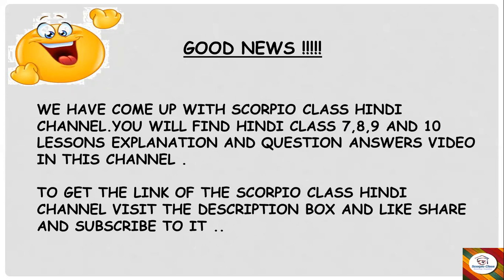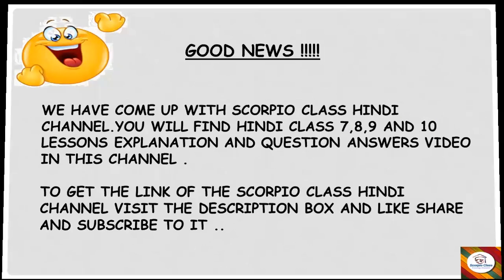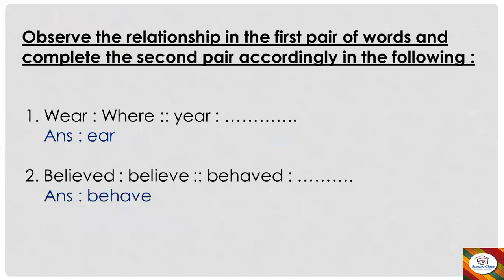So students, let us now start with the analogy questions. The heading under which these questions are given in your question paper is: 'Observe the relationship in the first pair of words and complete the second pair accordingly in the following.' This type of heading will be given and you will have at least four marks of questions in your board exam under this topic.